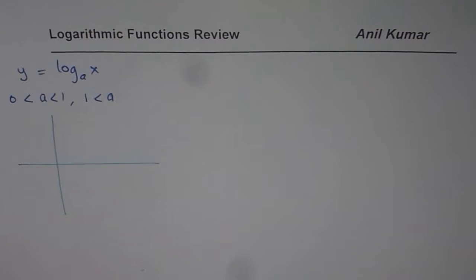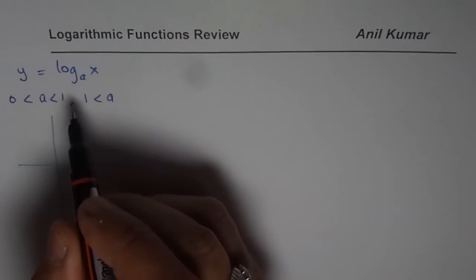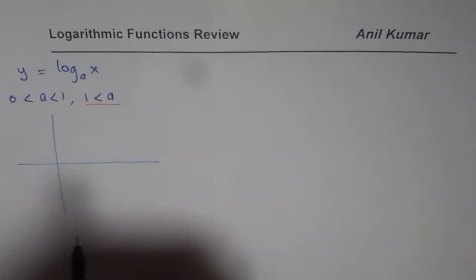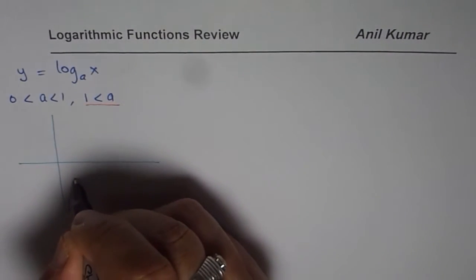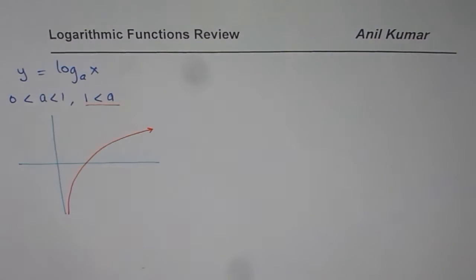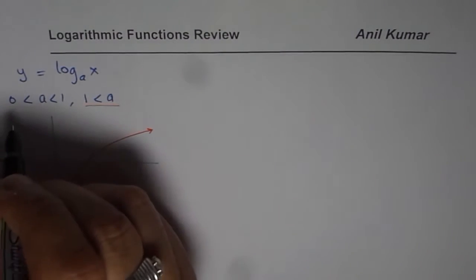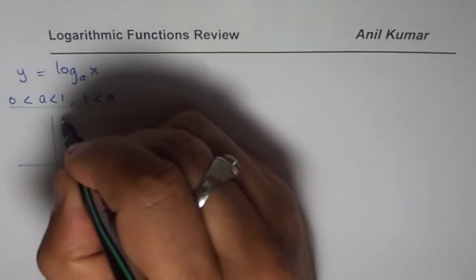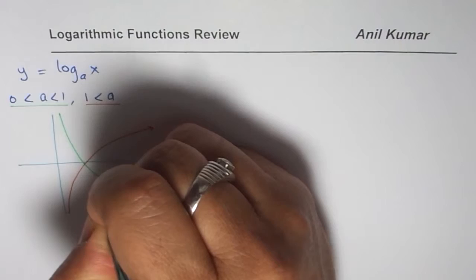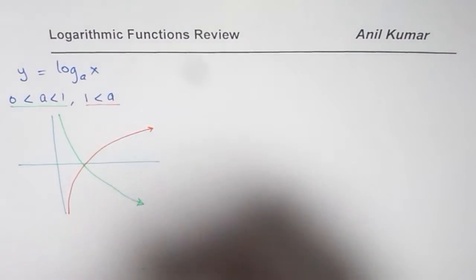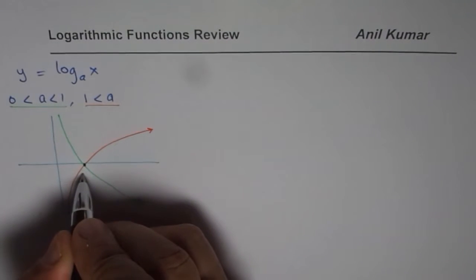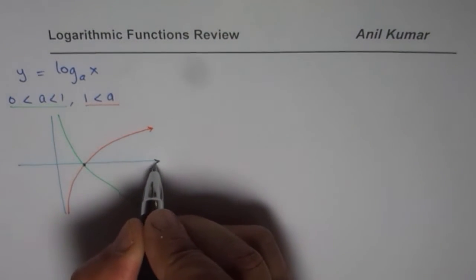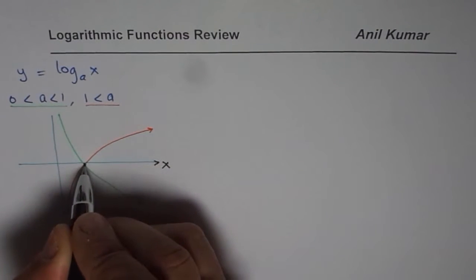Depending on the value of the base, the graph of a logarithmic function is either always decreasing or always increasing. When a is greater than 1, the function is always increasing. When a is between 0 and 1, the graph is always decreasing. Both graphs share one common point: when x equals 1, y equals 0.